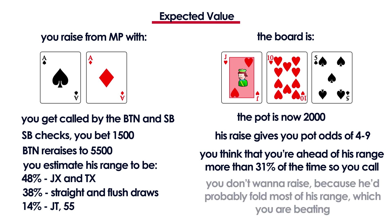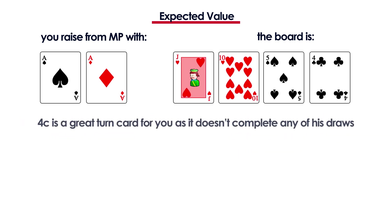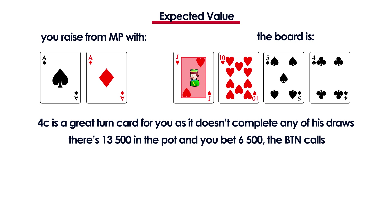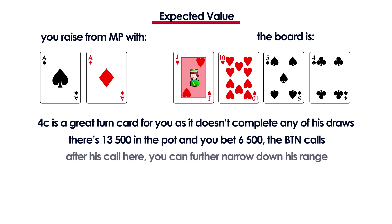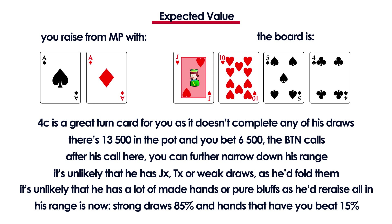So you call. You don't want to re-raise because you think it will probably make him fold all his jacks and tens. The turn is a 4 of clubs — a great card for you as it doesn't complete any of his draws — and you decide to bet 6500. The button calls. Because he just calls there, you think that he most likely doesn't have a pair of jacks or tens at this point and that he'd fold most of his weak draws. You think he'd re-raise all-in with the majority of hands that are beating you and all his pure bluffs. So you narrow down his range to strong draws 80% of the time and hands that are beating you 15%.